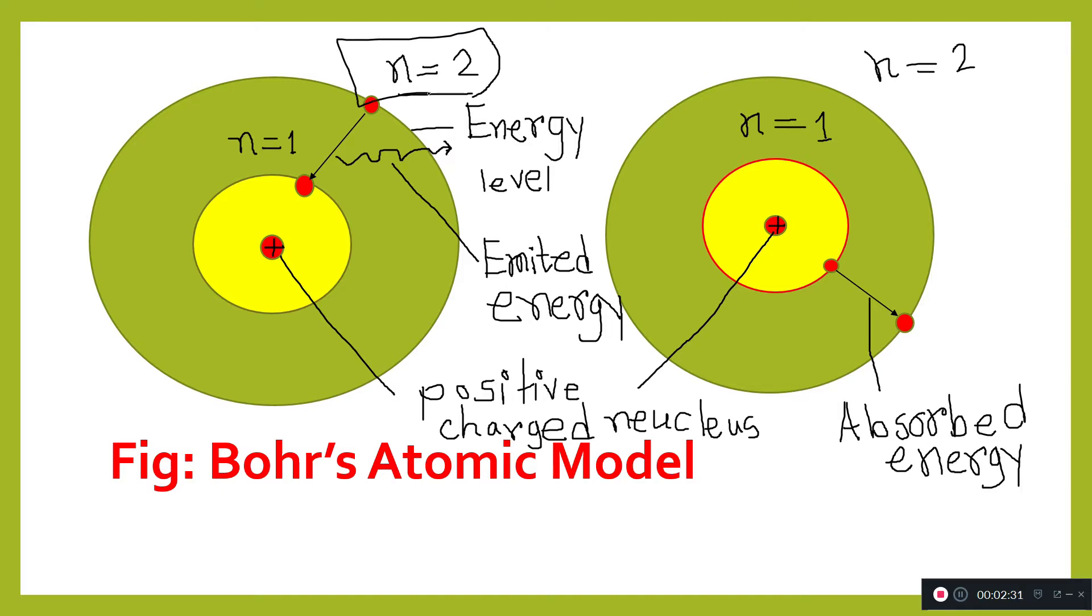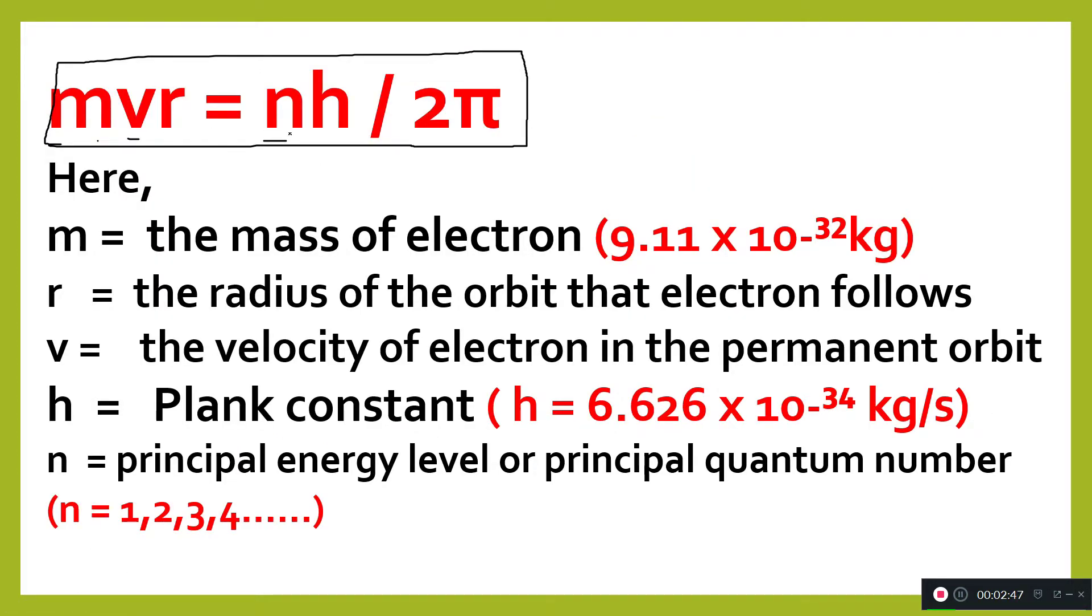According to Bohr's model, the angular momentum of an electron in an energy level is mvr equals nh divided by 2π. Here, m is the mass of the electron, 9.11 times 10 to the power minus 32 kilograms. R is the radius of the orbit that the electron follows, and v is the velocity of the electron in the permanent orbit.